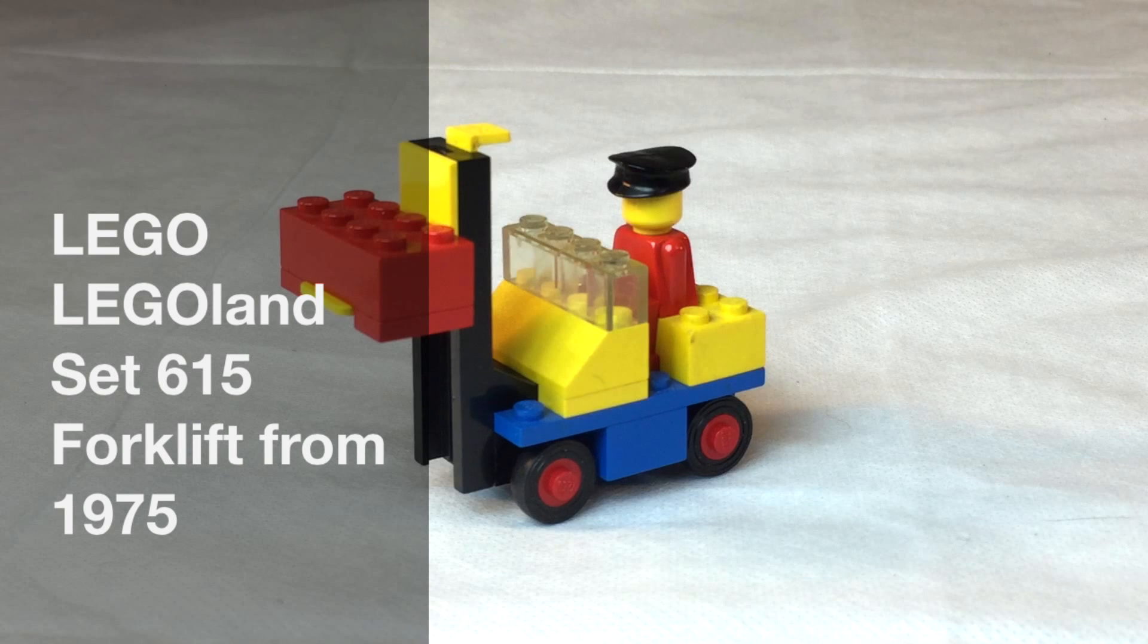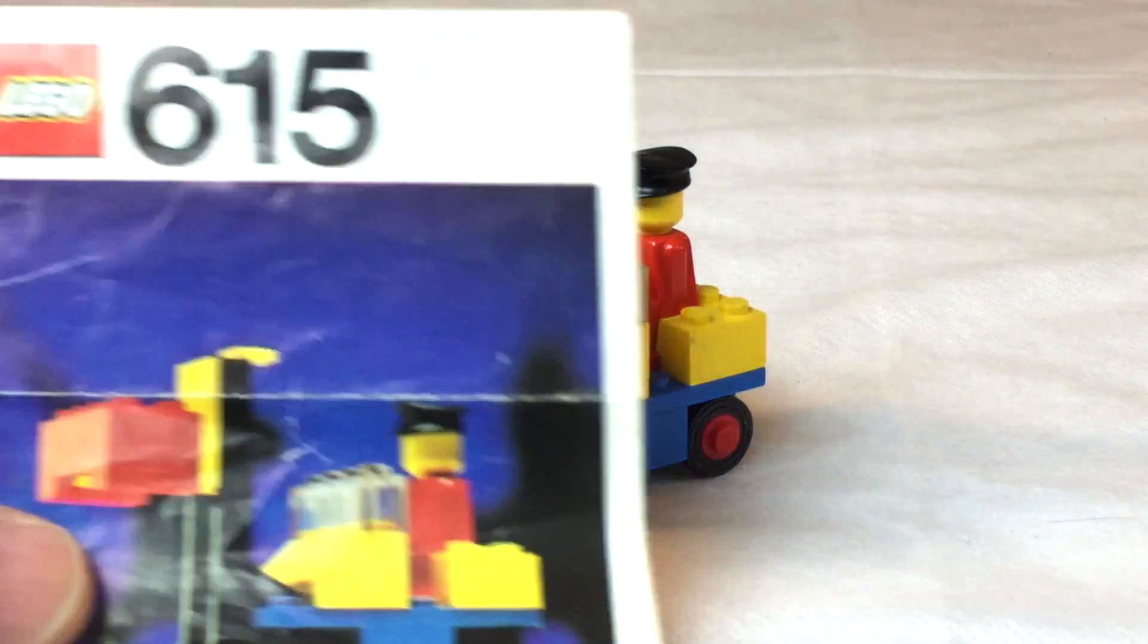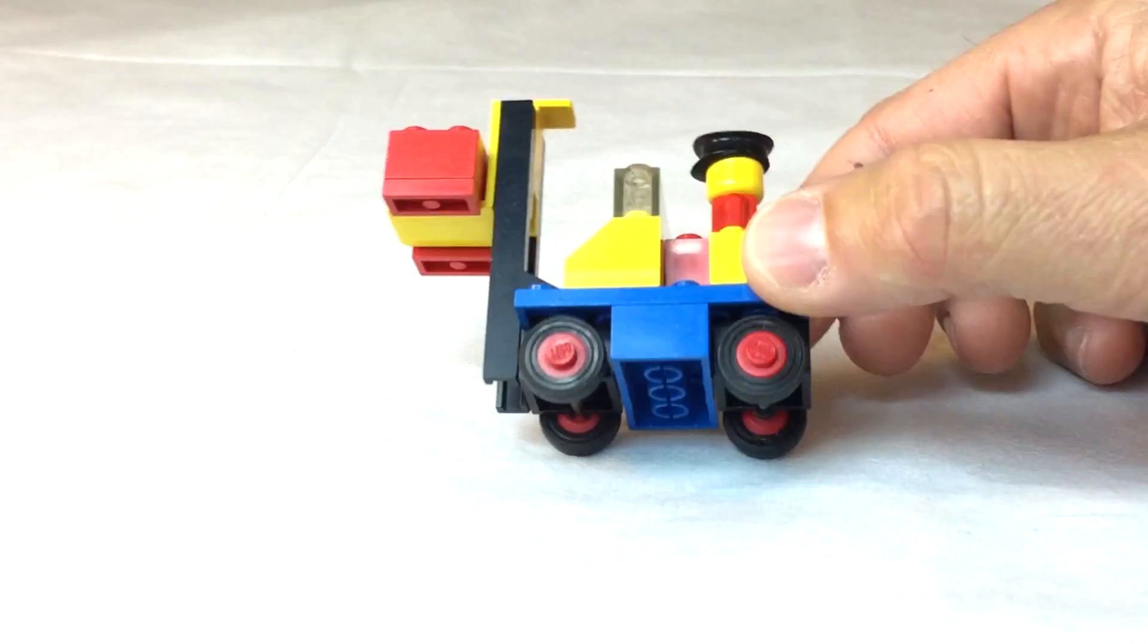Hey, it's Pretzel. We're going to look at another vintage Lego set. Yes, this is 17 pieces of awesomeness. It's a forklift, set 615 from 1975. Awesome. 17 pieces, you can almost see them all. It's a mini-wheel vehicle.